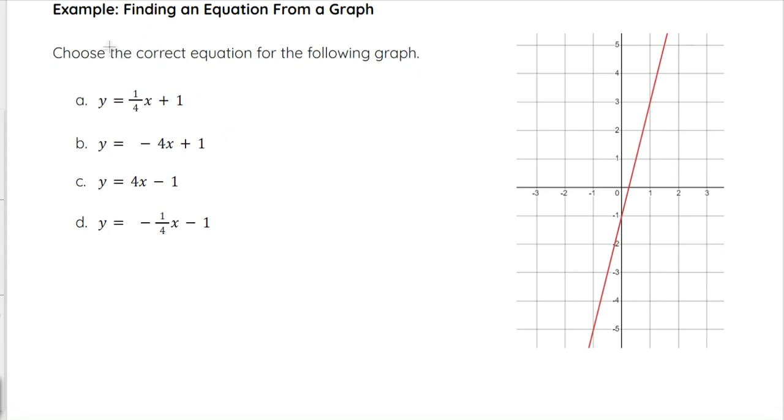Let's start by reading the directions. It says choose the correct equation for the following graph. So looking at this graph, I'm going to just pick a random point on the graph. I'm going to go ahead and pick the y-intercept, which is at 0 comma negative 1. So my x value of this point is 0 and my y value of this point is negative 1.